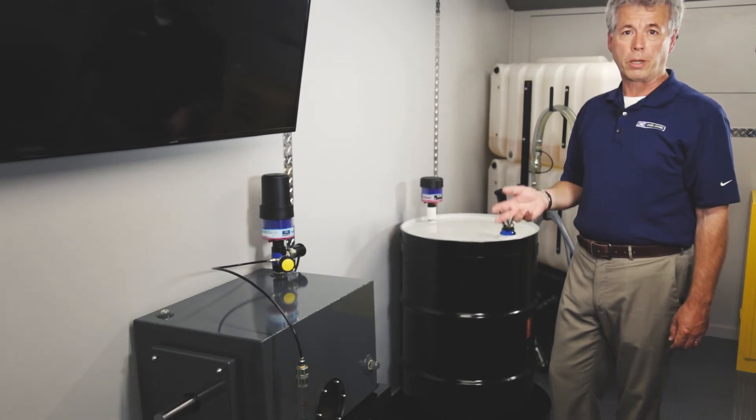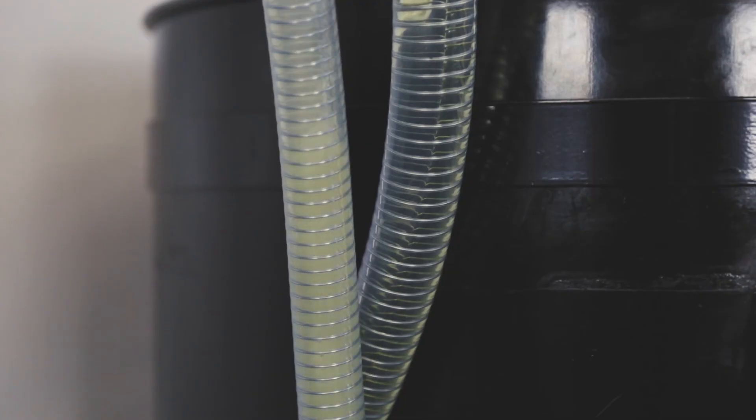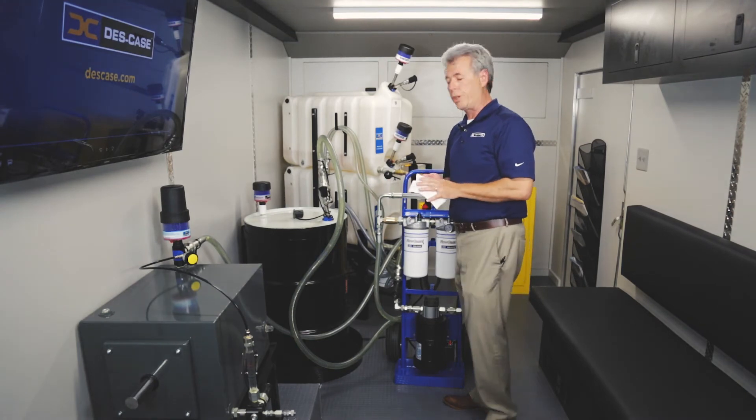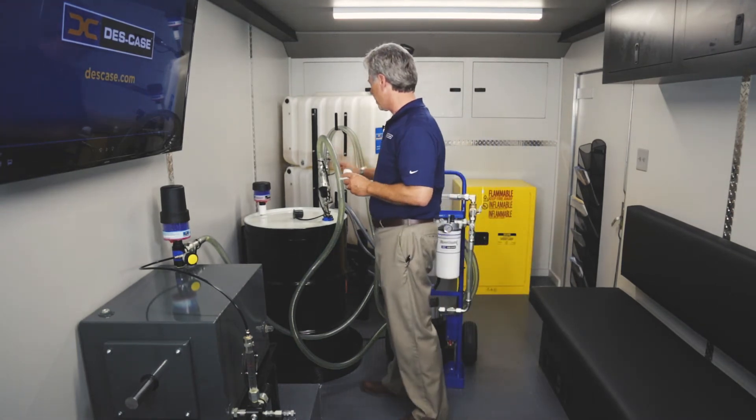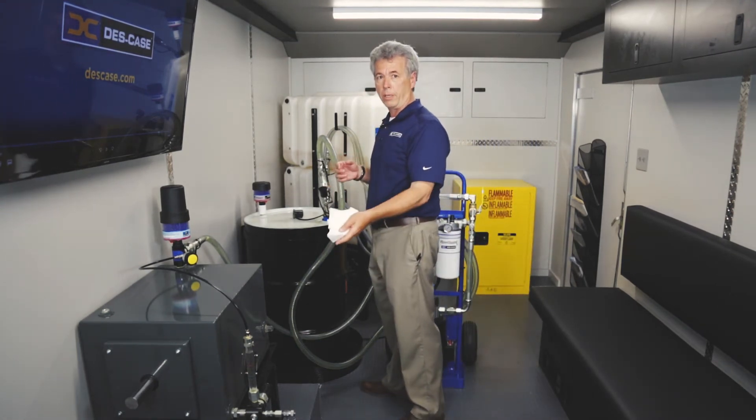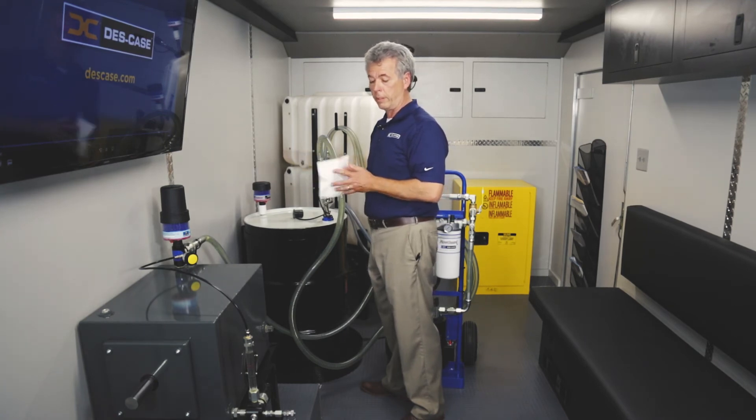So let's go ahead and get the filter cart hooked up and fill it up. Okay, so now that we have our machine filled, we want to remove the suction hose from our drum and put it down on the drain port of the unit that we want to filter.